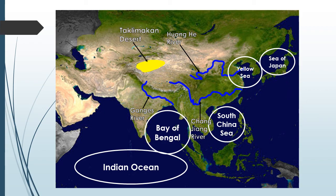This is the Taklamakan Desert. It's located in northwest China. It's nicknamed the Sea of Death. It's believed that the name Taklamakan means you can get in but you can't get out.